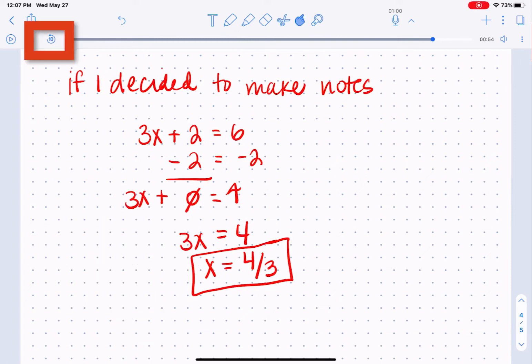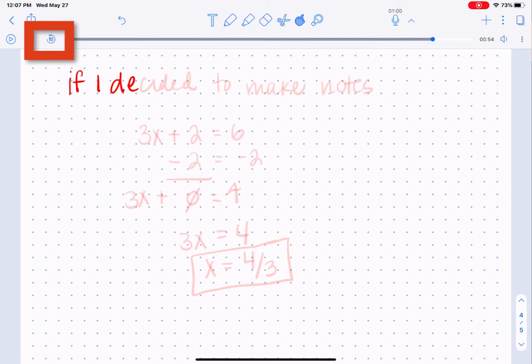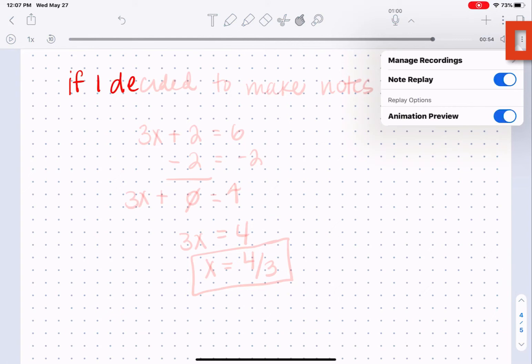So I can tap on that back with the 10, and it's going to jump me back 10 seconds in my notes. So I can play it back again. On the far right hand side with the three dots on that mini playback bar, if you tap on that, you can choose to manage your recordings if you need to.